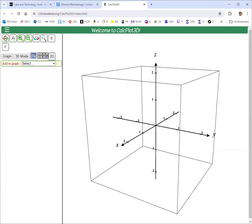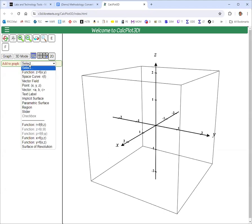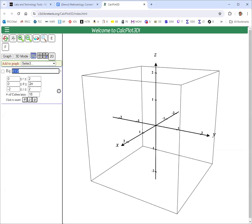So we'll first put in the cylindrical coordinate equation. So from the dropdown menu, select implicit surface and then type it in r squared. And then to put in theta, use the little button there.